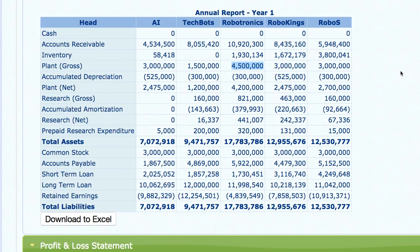Looking at research investment, Robotronics and Robo Kings have invested a lot in research while AI has invested nothing. This gives us an indication of where different companies are trying to sell. AI with no research investment is possibly targeting wholesalers and OEMs, while Robotronics with heavy research investment is likely targeting VARs. Robo Kings, which also invested in research, may be targeting VARs or OEMs.